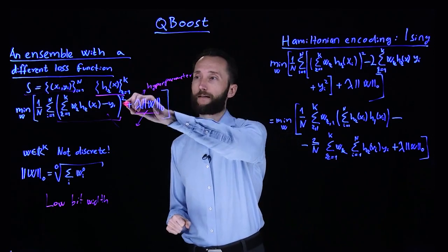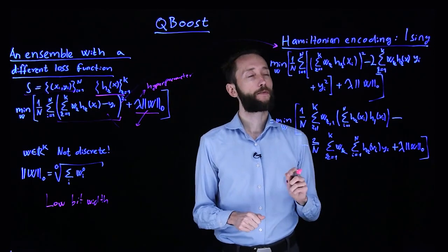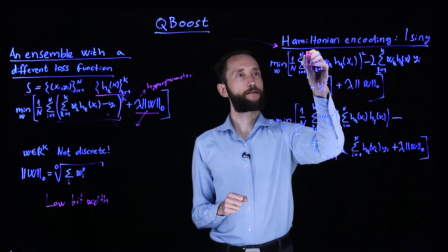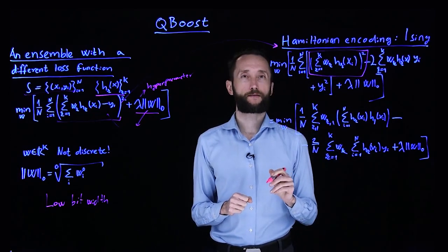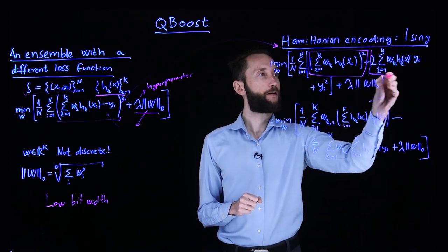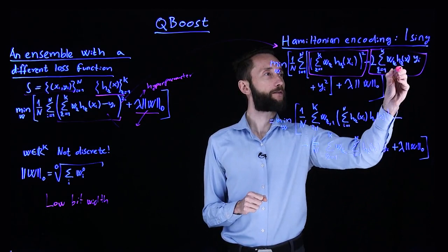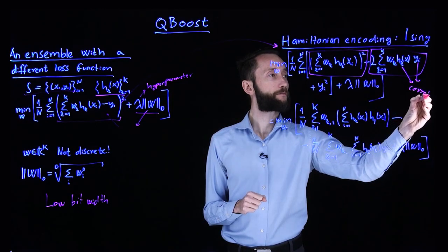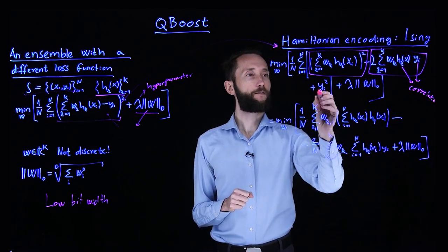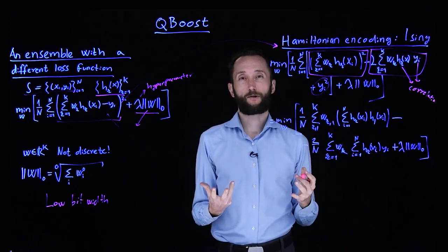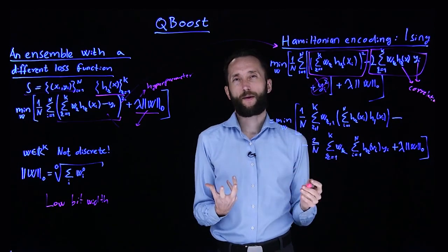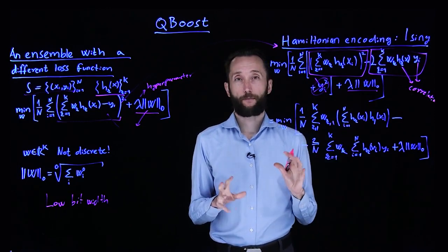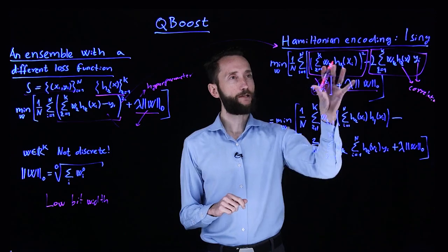So here I'm just rewriting this expression in a different way. So what I do is I expand this square loss. So now I have this quadratic term over the sum of the ensemble. Then I have this term which measures the correlation between the output of a predictor and the actual label. We have this term which is just the label squared. We can get rid of it because there's no parameter in it, so it's not going to affect our minimization. And finally, we retain the regularization term as it was.